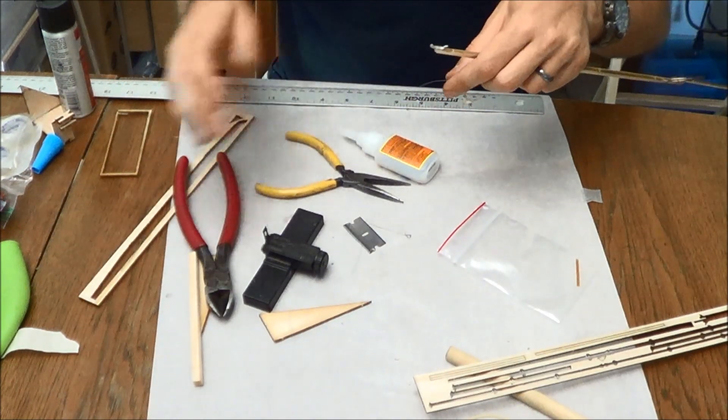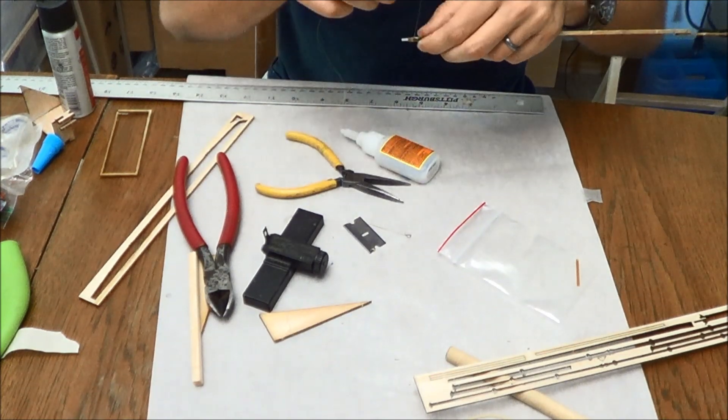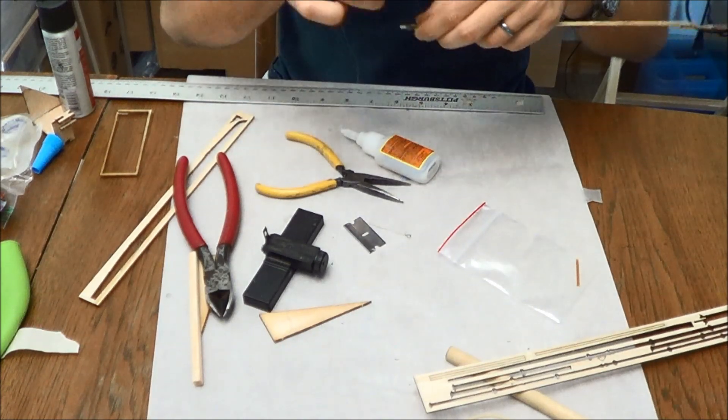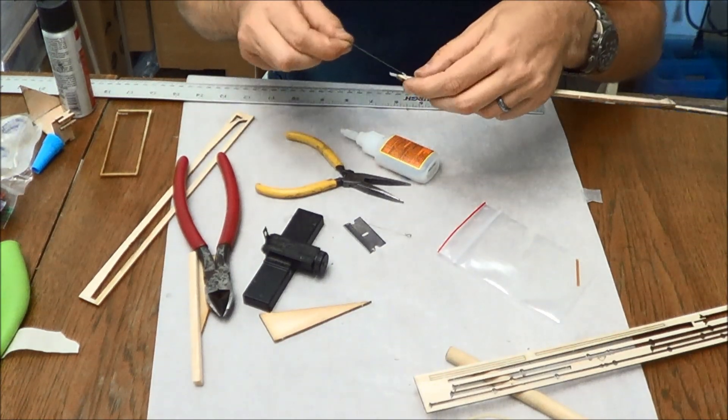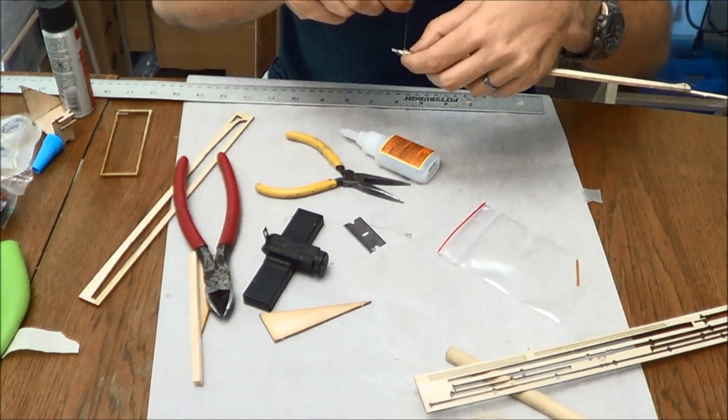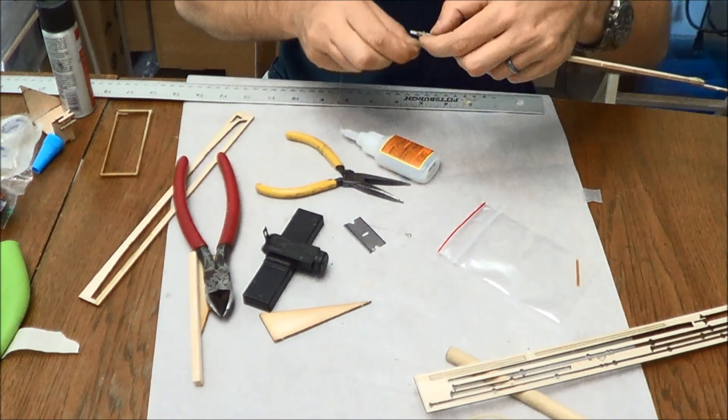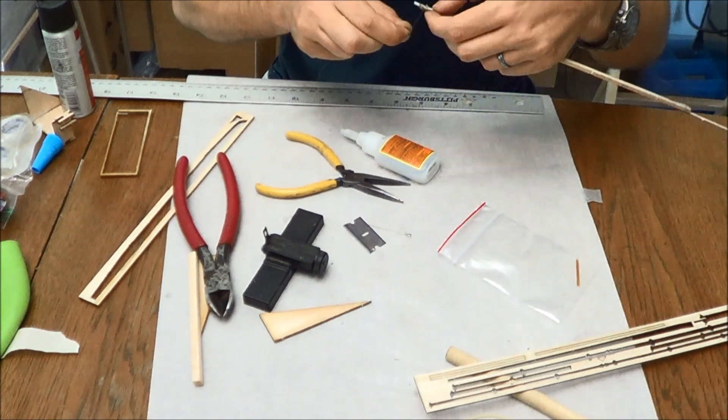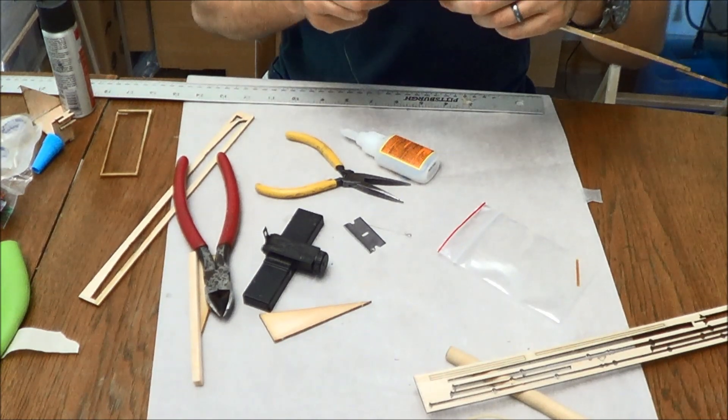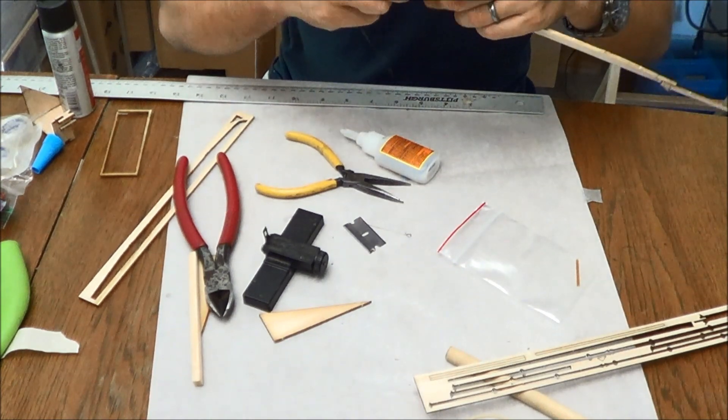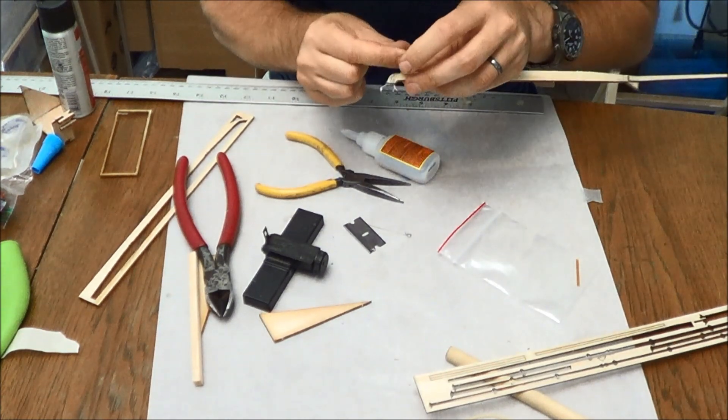Now, we're going to take our thread here and do the same thing we did on that rear hook, except maybe a little more vigorously. Because we do not want that thrust bearing to come loose.